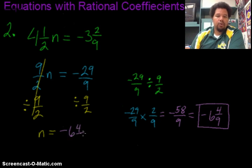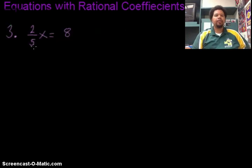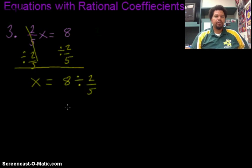Another example with a fraction in it as my coefficient. So what I need to do is cancel out that 2 fifths or divide both sides by 2 fifths. In order to do this division, I'm going to put a 1 underneath this 8 since I'm dividing by a fraction. And then I need to multiply by the reciprocal.